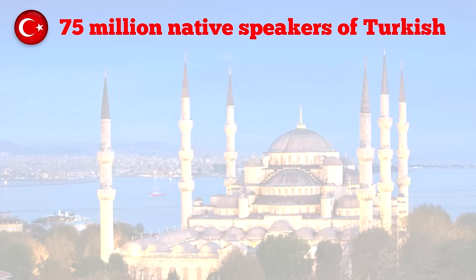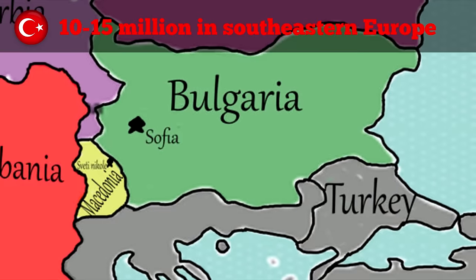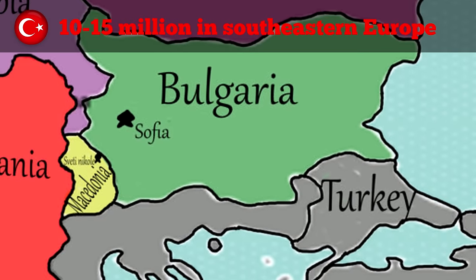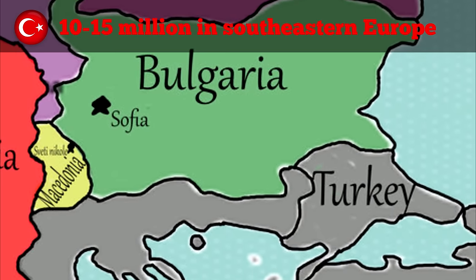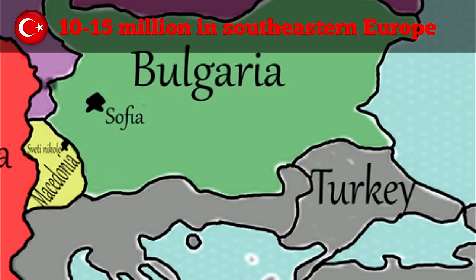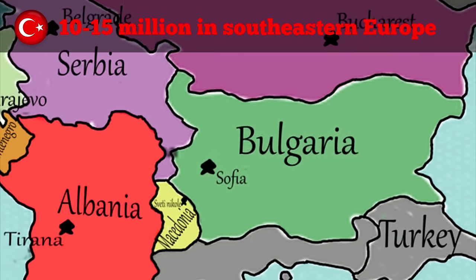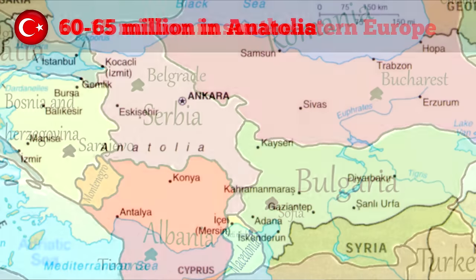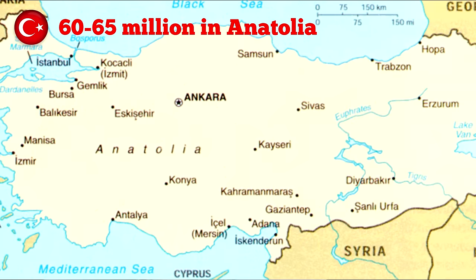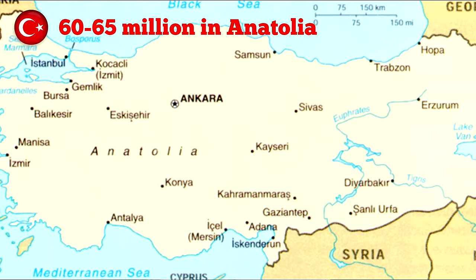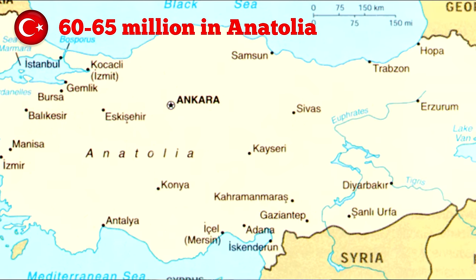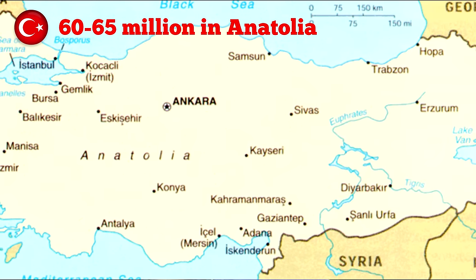There are around 75 million native speakers of Turkish. That includes 10 to 15 million people in Southeastern Europe — mainly in the part of Turkey located in Europe, but also as a minority language in the Balkan area — and 60 to 65 million people in Anatolia, the part of Turkey located inside of Asia.